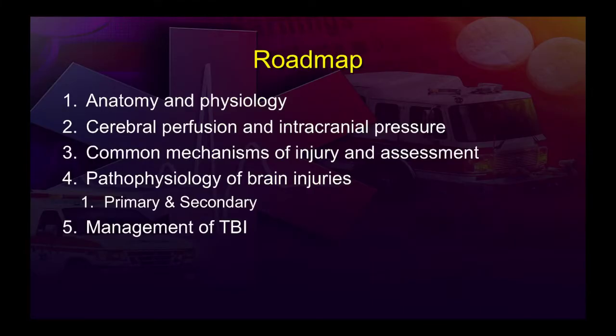Our roadmap includes a brief review of anatomy and physiology — some reviewed at the beginning, others as we get into specific injuries. We'll review cerebral perfusion and intracranial pressure, common mechanisms of injury, the injuries they produce, and how assessment might identify those things. We'll also cover the categorization and pathophysiology of brain injury into primary and secondary types, and finally TBI management at the paramedic level.